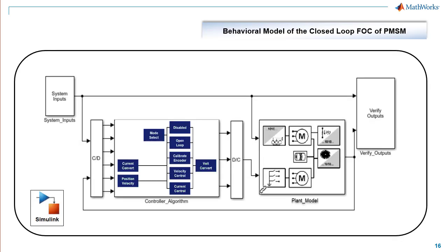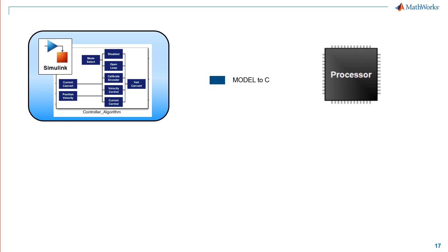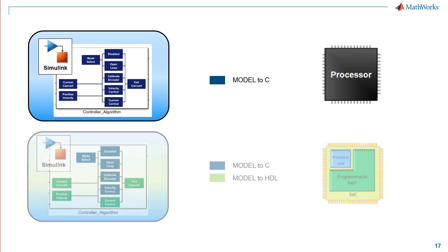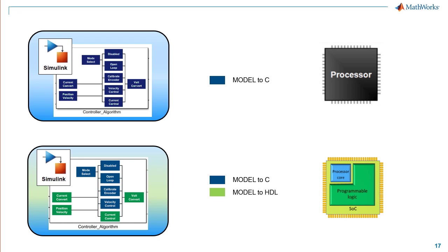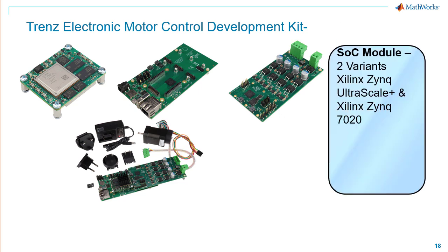With this top-level system model built, engineers can generate optimized C and C++ for the controller subsystem using MathWorks Embedded Coder tool. I will show how you can extend this capability and generate HDL code to target the FPGA architecture on the SOC. I will be using the Trenz Electronic Motor Control Development Kit. The Trenz Electronic hardware is a modular kit consisting of the SOC device module, a carrier board, and the motor driver module. The SOC module is available in two versions: the Xilinx Zynq Ultra Scale Plus, which I will be using for this talk, and the Xilinx Zynq 7020 series. Both these hardware variants are supported by MathWorks.